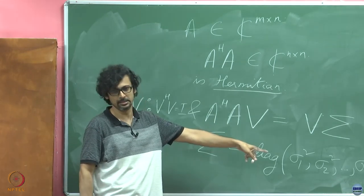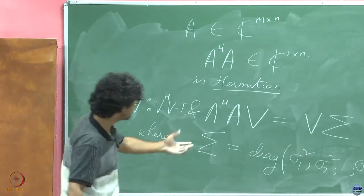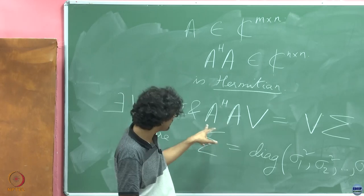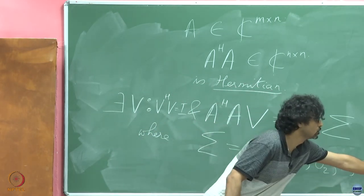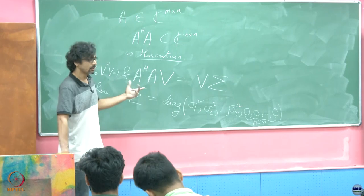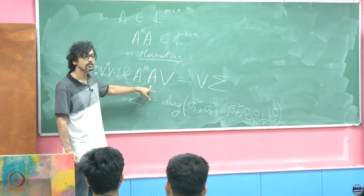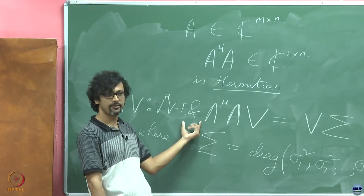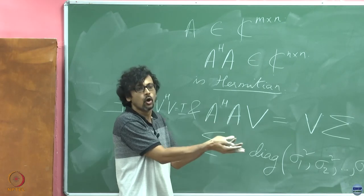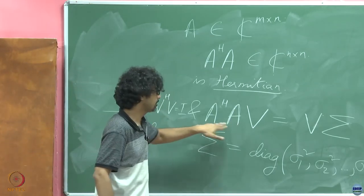We have actually spoken about this briefly in the least squares solution, but now we are making it very explicit. We gave this matrix a kind of a name — we said it is positive definite, of course when it was real. Such a matrix will always have only positive or at best non-negative eigenvalues — it can never have negative eigenvalues. If you hit it with V^H on the left and V on the right, it equals the norm of AV squared, which is always non-negative. Therefore this matrix is positive.